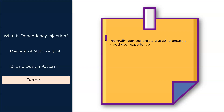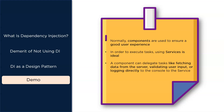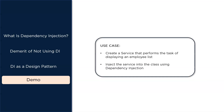Components are used to ensure a good user experience and do not generally execute tasks. To execute those tasks we make use of services. A component can delegate tasks like fetching data from the server or handling network-related issues to a particular service. I'll be creating a service that performs the task of displaying an employee list, and then injecting this service into the class using dependency injection. Let's head to Visual Studio Code.